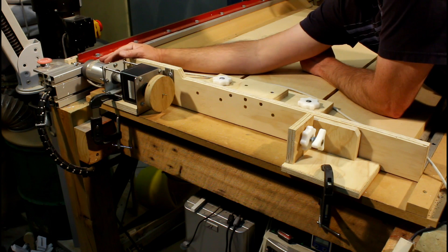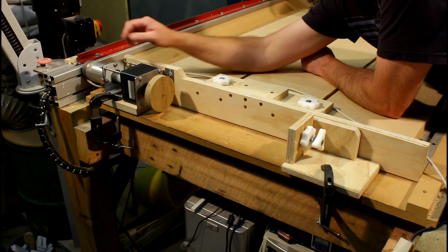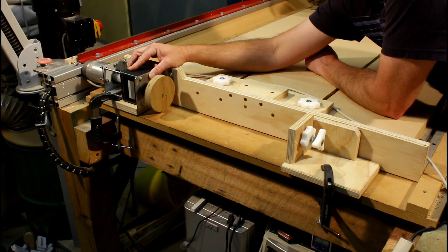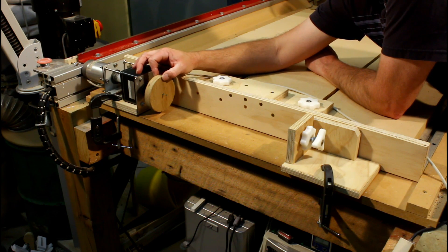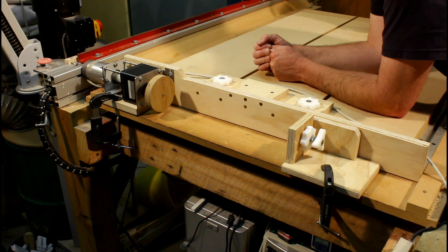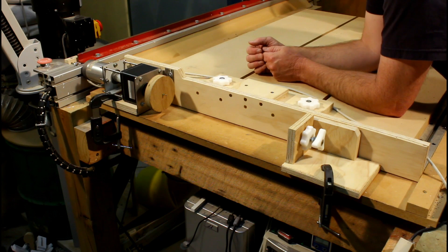This gearbox is a 30 to 1 reduction drive and it's got a small amount of backlash in it. Now I don't know how that's going to affect it, I can probably use the backlash compensation to get rid of that, but it's a matter of just seeing.